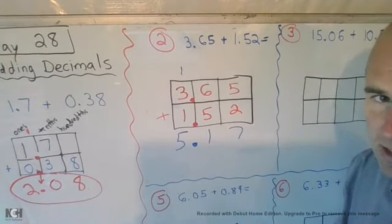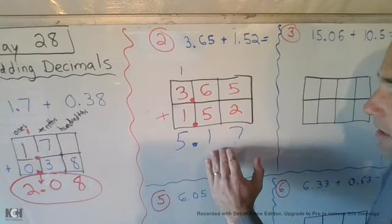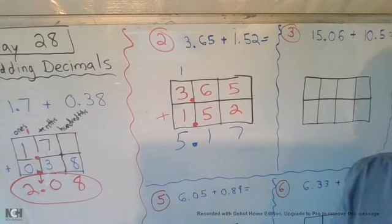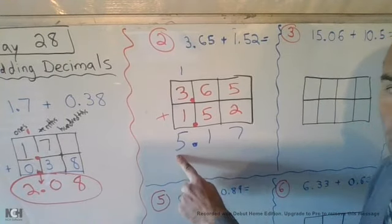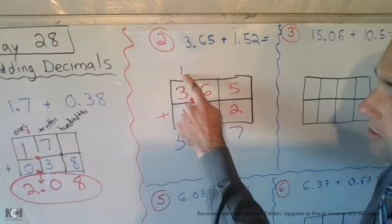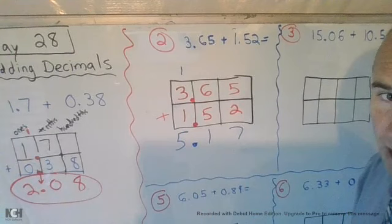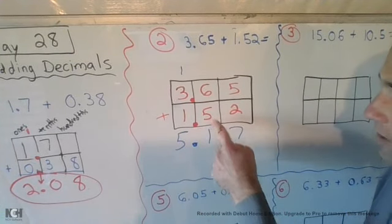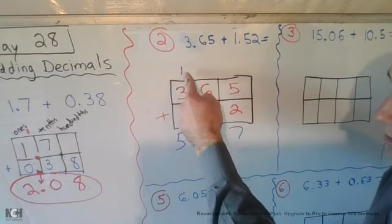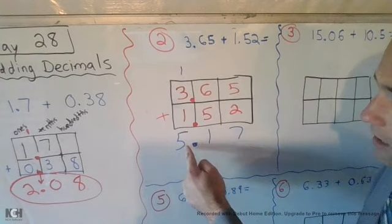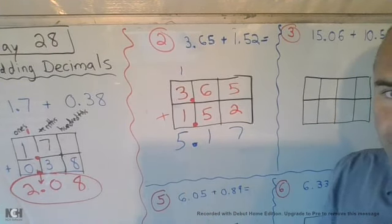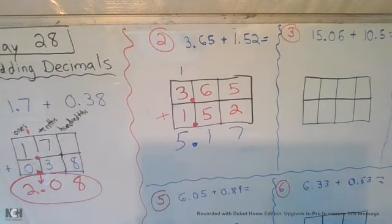So, the answer you should have received was 5 and 17 hundredths. If you only got 4 here, it's because you forgot to carry over the 1 from the 10ths. Because 6 plus 5 gives you 11. And therefore, that 1 from 11 has to be carried over into the 1's place. So, let's move on to number 3 now.